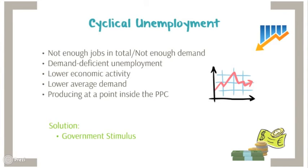We can reduce cyclical unemployment through government policy by increasing the rate of growth, lowering interest rates, and increasing government spending and consumption.